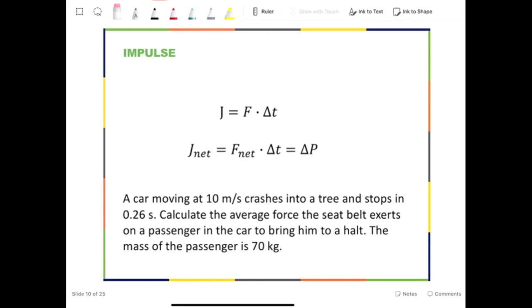Impulse is a vector and its unit is Newton times seconds. An object may experience multiple forces during the same time. Therefore, the net impulse is equal to the net force multiplied by the time interval.